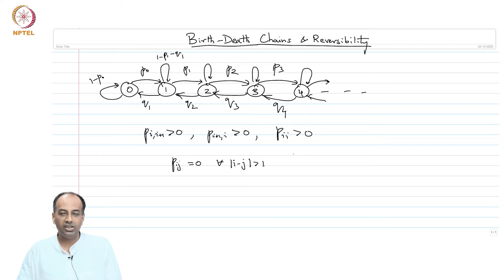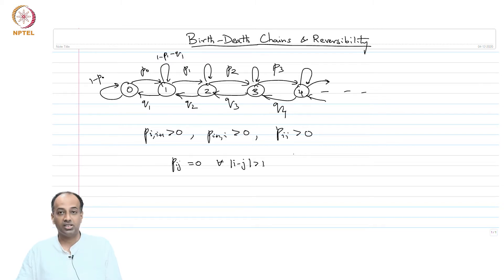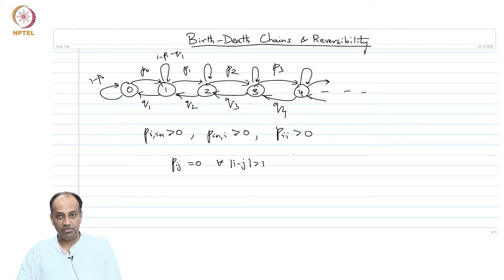These birth-death chains can be used to analyze populations. They are widely used in analyzing queuing systems. So, these birth-death processes are very important.